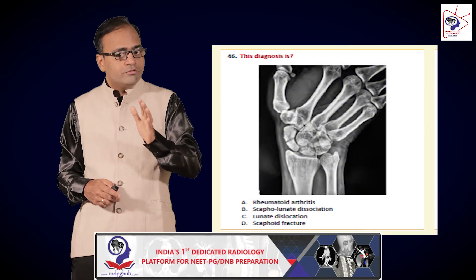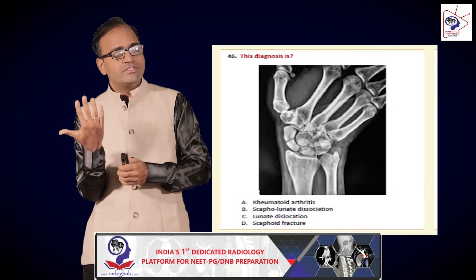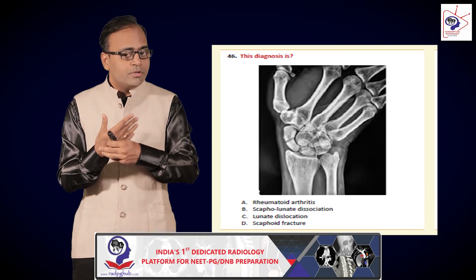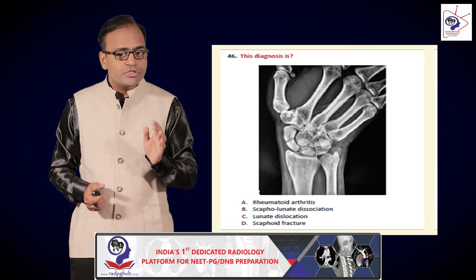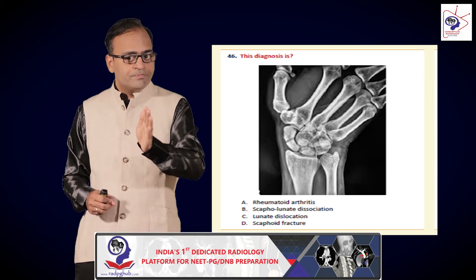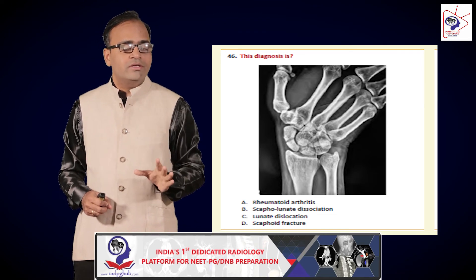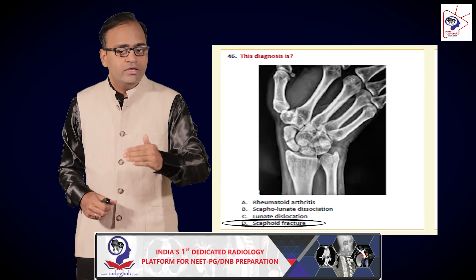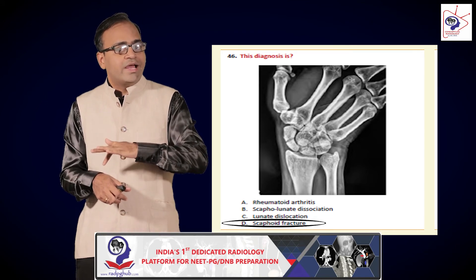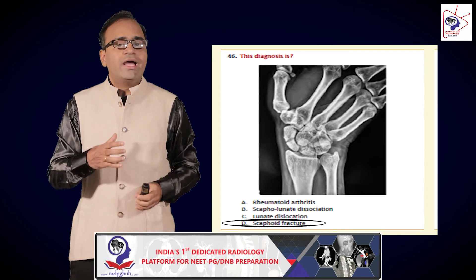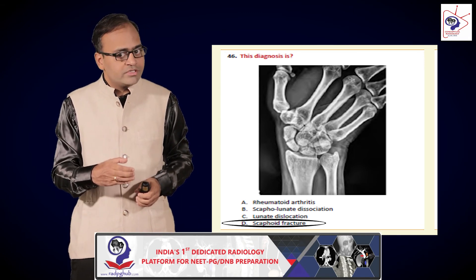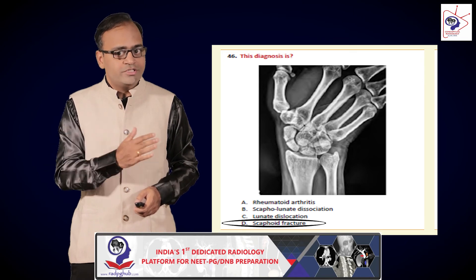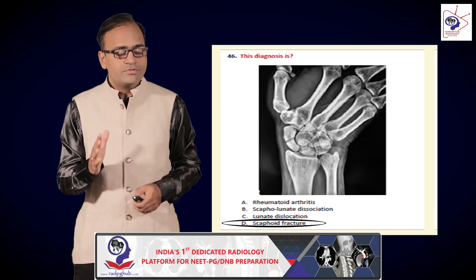Identify the fracture — this is a wrist radiograph in ulnar deviation, so the wrist has been deviated towards the ulnar side, which is why a particular bone is very well seen. Looking carefully at the carpal bones, the first bone in the proximal row — an elongated appearing bone — has a fracture. This is a typical scaphoid fracture. Remember that a scaphoid fracture is often not identified on early radiographs; diagnosis is clinical with point tenderness at the anatomical snuff box. The hand is immobilized in a glass-holding position, and a follow-up radiograph has a greater probability of detecting the fracture than the immediate acute post-traumatic radiograph.